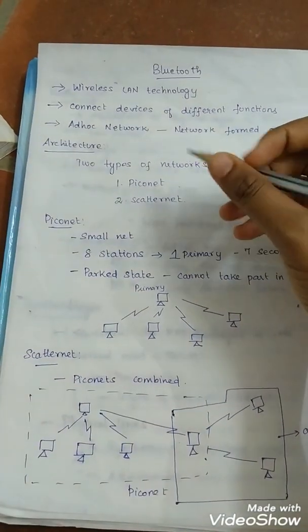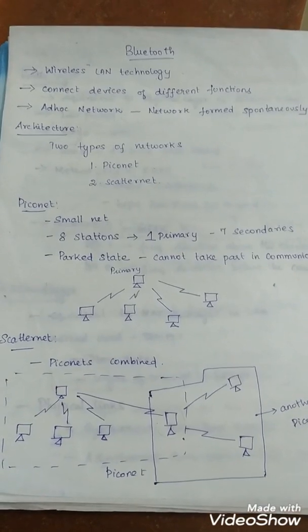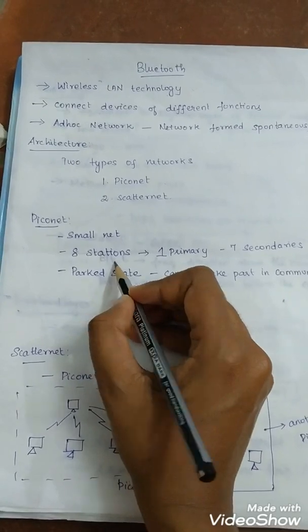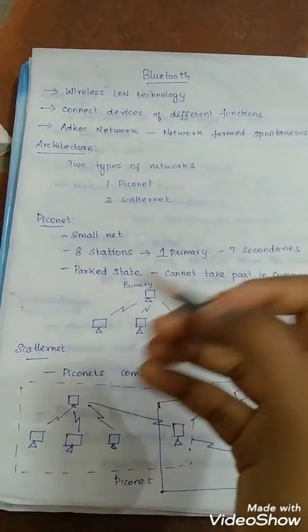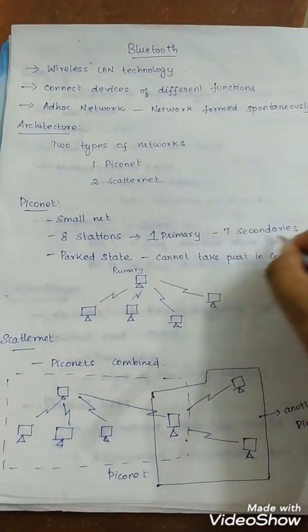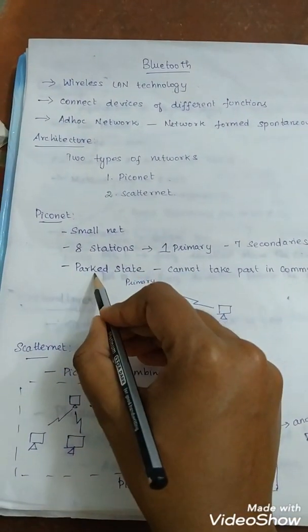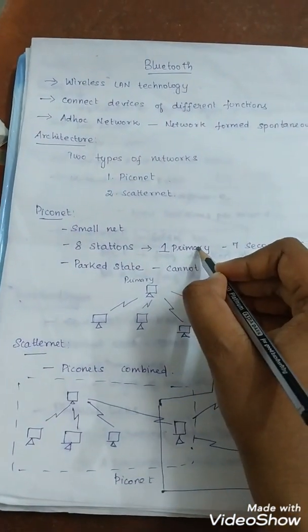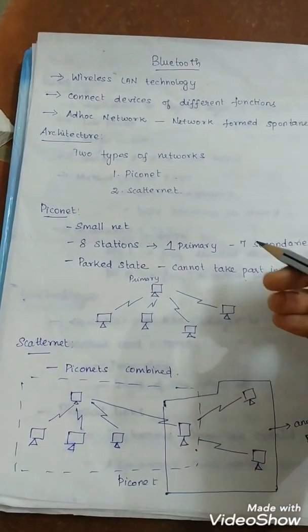Next, see the architecture of Bluetooth. It consists of two networks: Piconet and Scatternet. Piconet is a small net. Piconet can have up to eight stations, one of which is primary and the rest are called secondaries. Piconet can have a maximum of seven secondaries. An additional eighth secondary can be in the parked state.